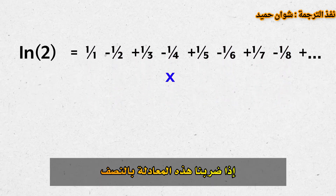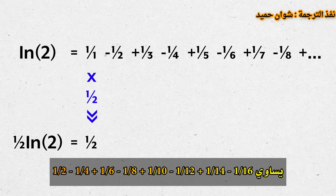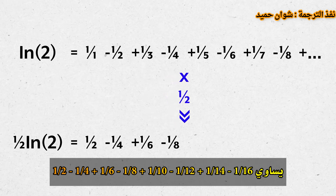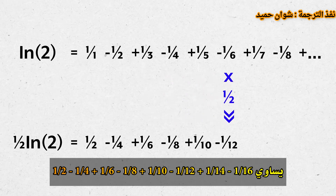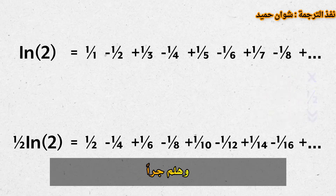If we multiply this equation by half, we get one half ln 2 equals 1 over 2, minus 1 over 4, plus 1 over 6, minus 1 over 8, plus 1 over 10, minus 1 over 12, plus 1 over 14, minus 1 over 16, and so on.